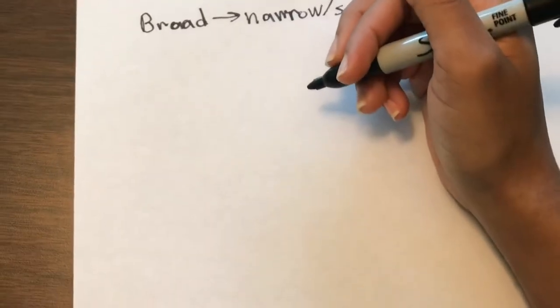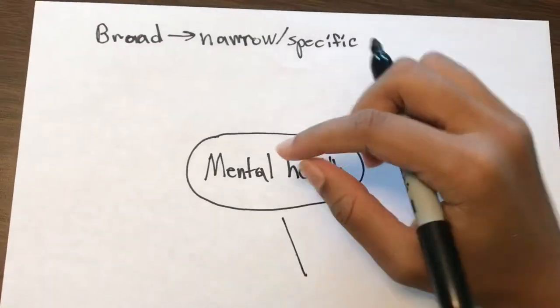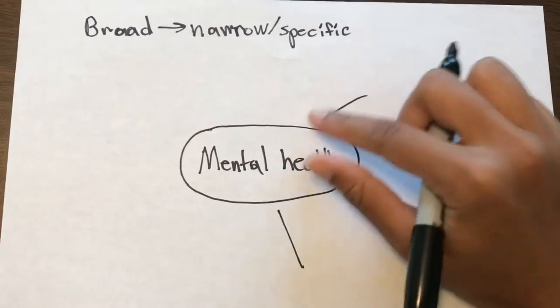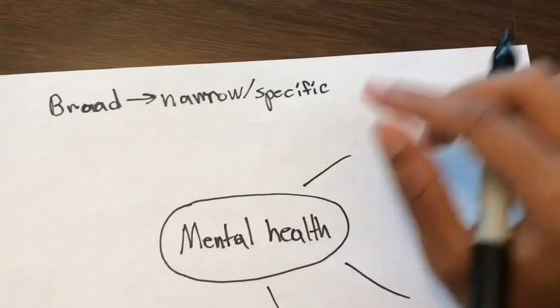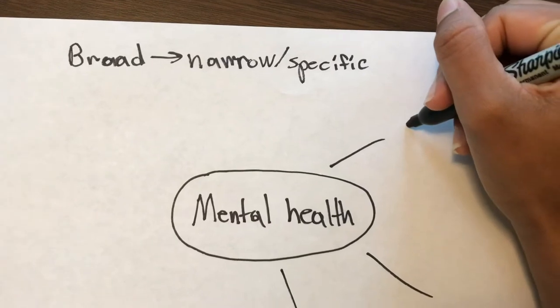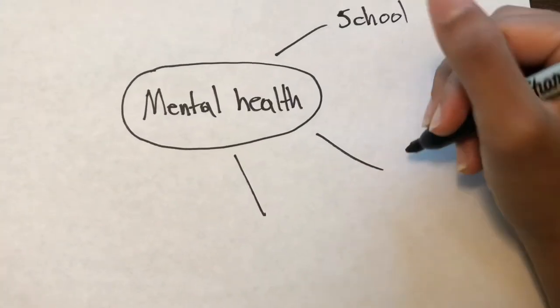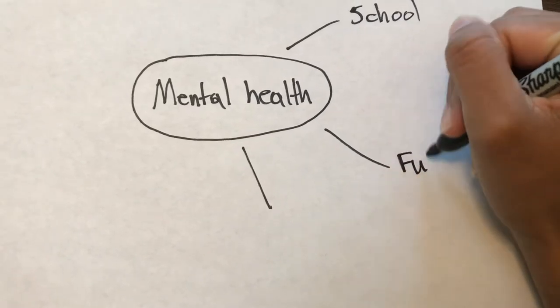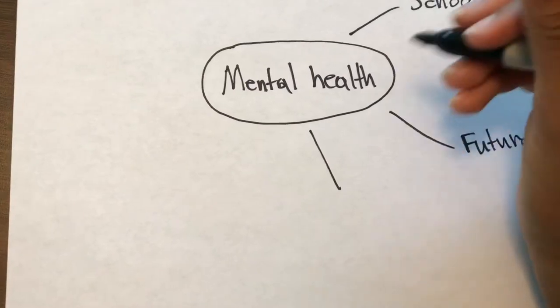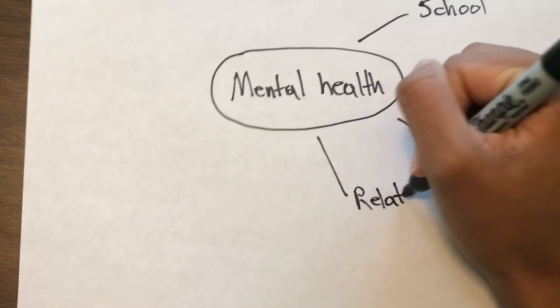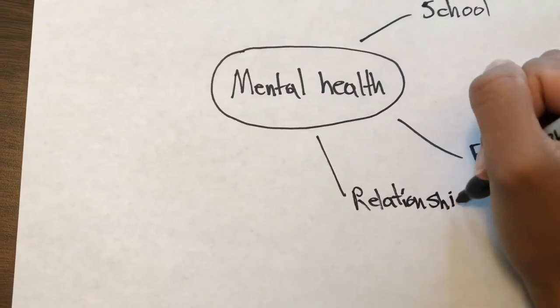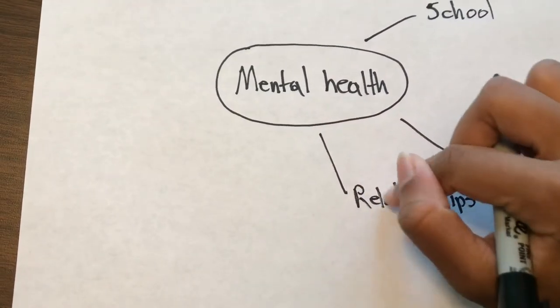So you're going to be going from a really broad topic to a really specific topic. If we're doing mental health — the main idea is that you're going to start with this big, broad topic and branch off into smaller little categories. So if we're talking about mental health, maybe we have mental health and school, maybe we have mental health and the future, maybe we have mental health and relationships.